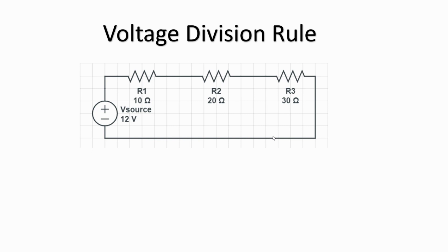Here's an example of a series circuit. It's the same circuit which we looked at yesterday to understand KVL. So in this circuit we have three resistors — 10, 20 and 30 ohms — connected end to end, supplied by a 12 volt voltage source.